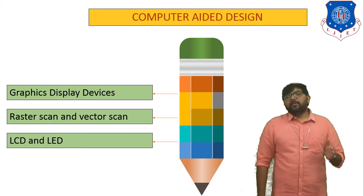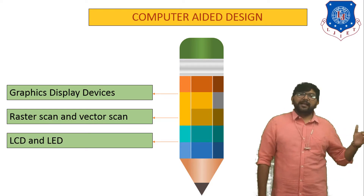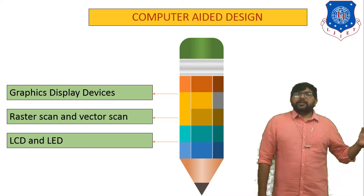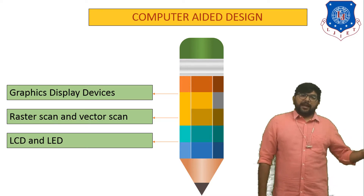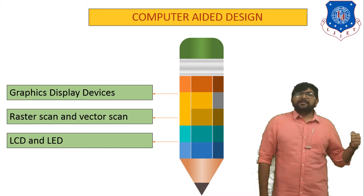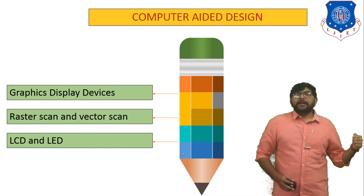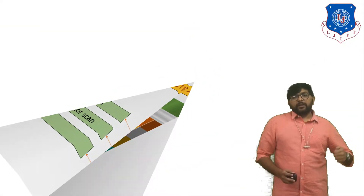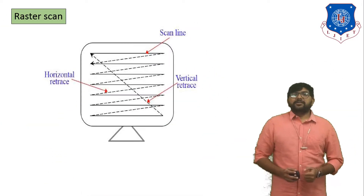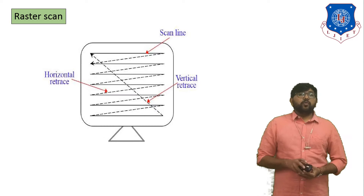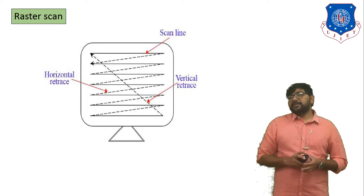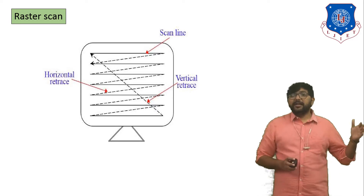What is the full form of LCD and LED? LCD full form is Liquid Crystal Display and the full form of LED is Light Emitting Diode. So the first topic we have to discuss is raster scan. What is raster scan? What is a raster scan display?